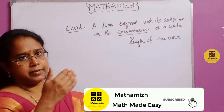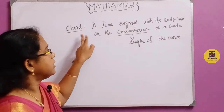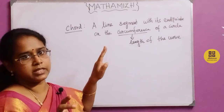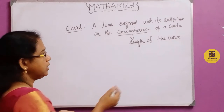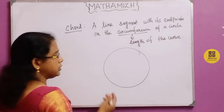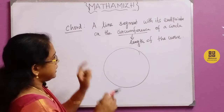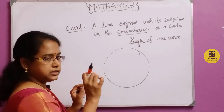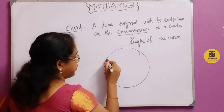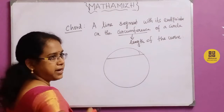The circle has related parts. The circumference is the total length of the curve — the boundary of the circle. The circumference means the total length of the curve.